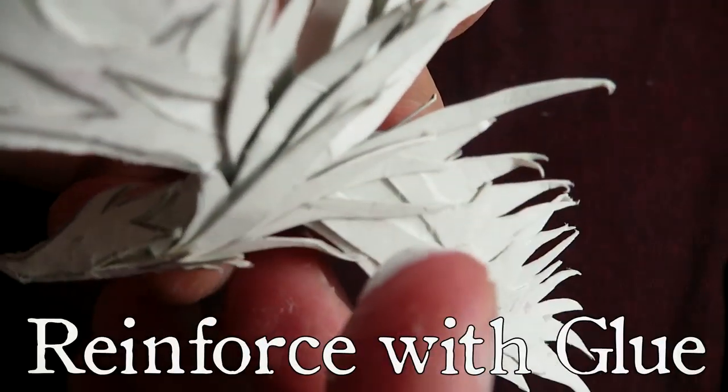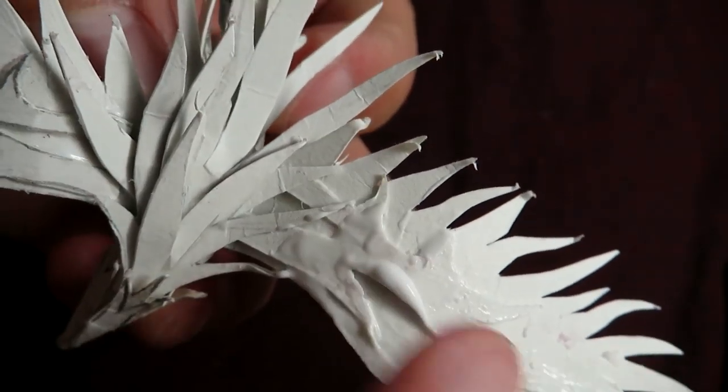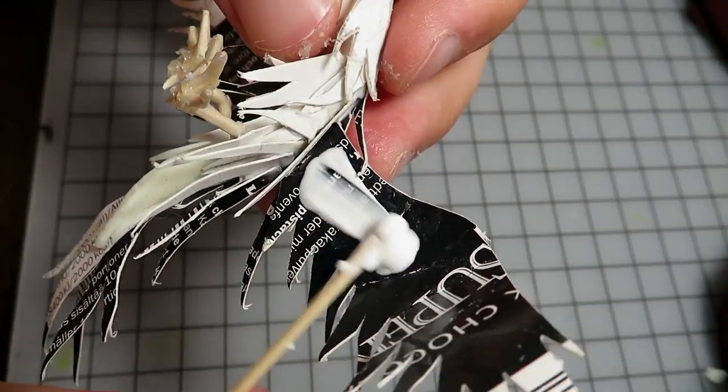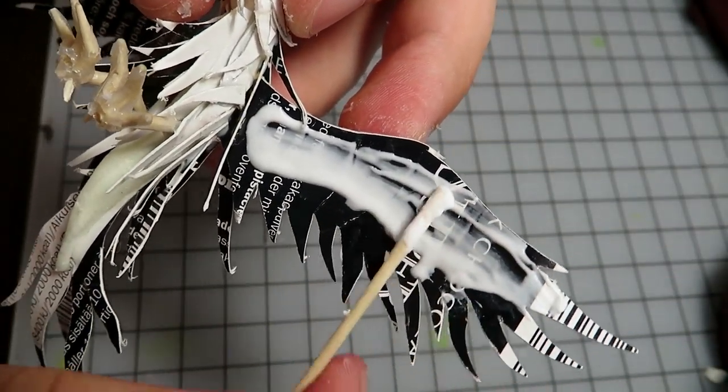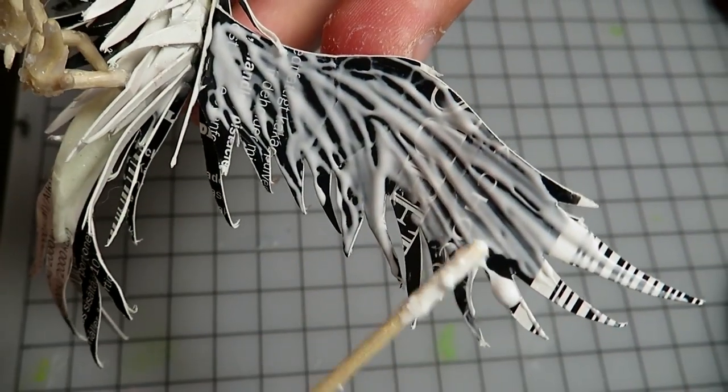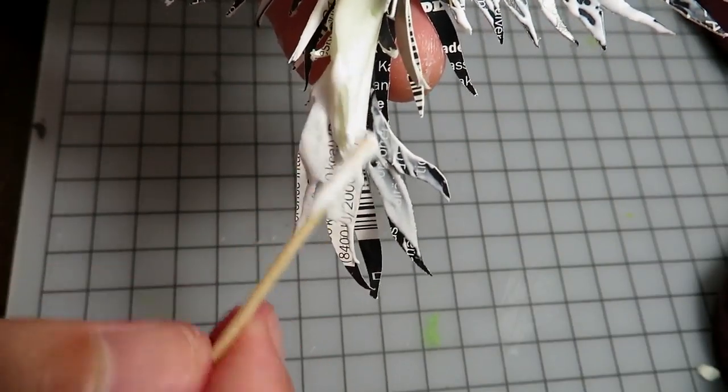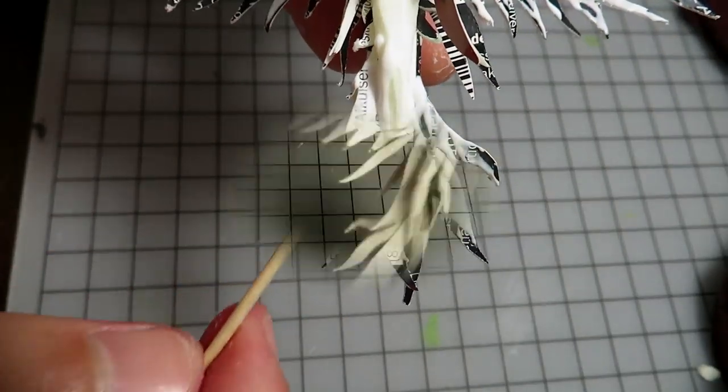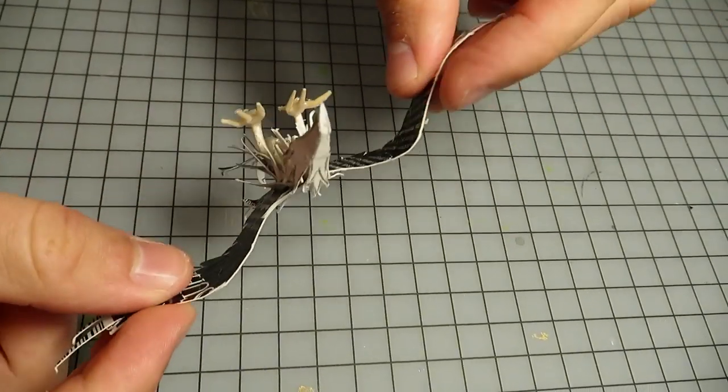Now you can reinforce the wings with the same PVA glue we have been using. Get messy with your fingers, or just use tools, you know, like regular people. Just cover the wings on both sides. Easy. With a stick and the glue, I made some textures on the lower side of the wing. But don't worry about it too much. You will probably only see the wings from the top. Your mom will be proud anyway. Here I'm testing if it's strong enough. It is.